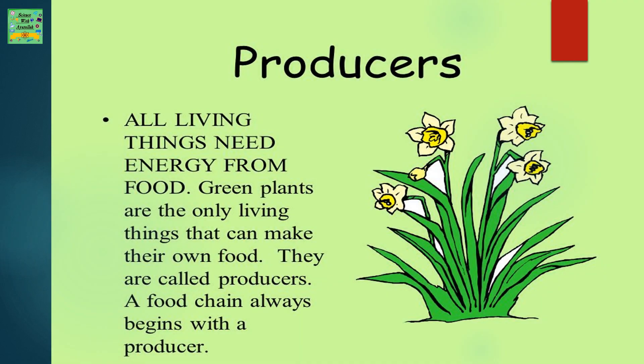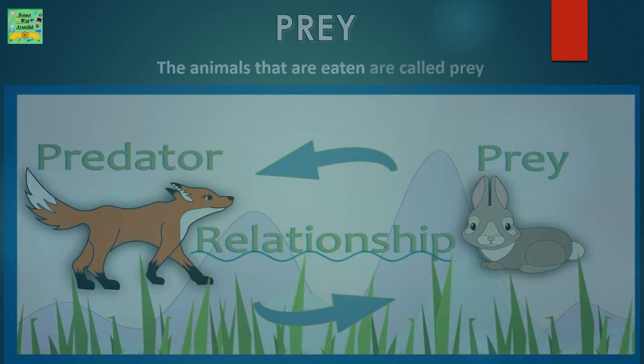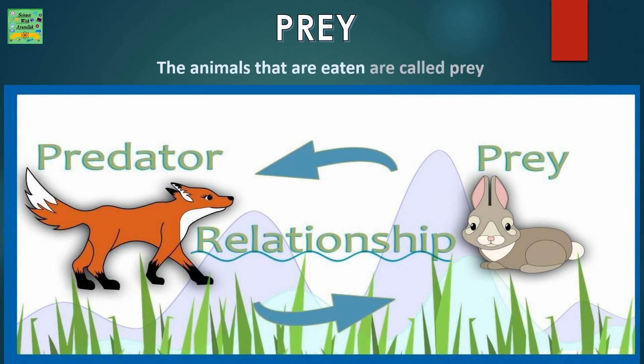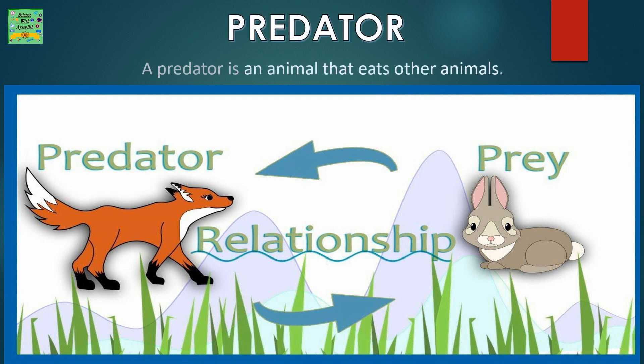Producers: all living things need energy from food. Green plants are the only living things that can make their own food; they are called producers. A food chain always begins with a producer. Prey: the animals that are eaten are called prey. Predator: a predator is an animal that eats other animals.